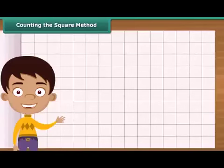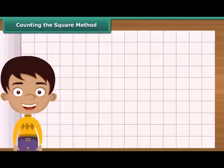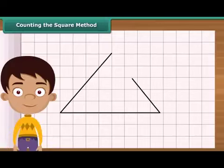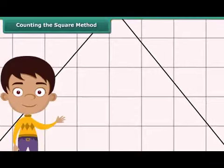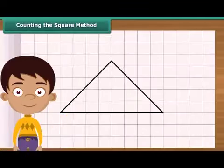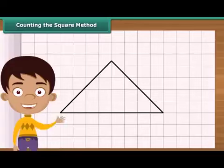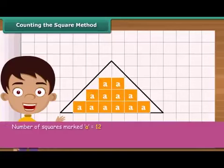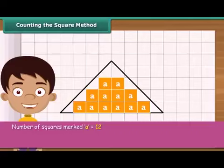Now let us calculate area with the help of a simple method — it is known as the counting the squares method. Draw the triangle on squared paper; each square has a side of one centimeter. First, count the complete squares enclosed by the triangle and mark each of these squares as A. Then count the squares whose more than half part is enclosed by the triangle and mark these as B.